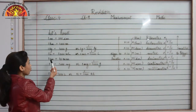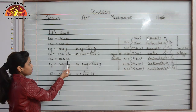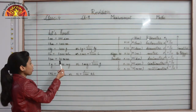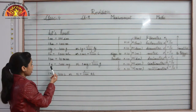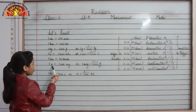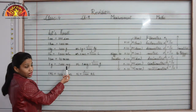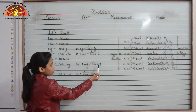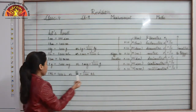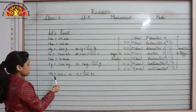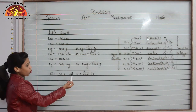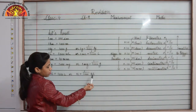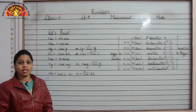1 centimeter is equal to 10 millimeter, or 1 millimeter is equal to 1 upon 10 centimeter. 1 gram is equal to 1000 milligram, or 1 milligram is equal to 1 upon 1000 gram. 1 kiloliter is equal to 1000 liter, or 1 liter is equal to 1 upon 1000 kiloliter.